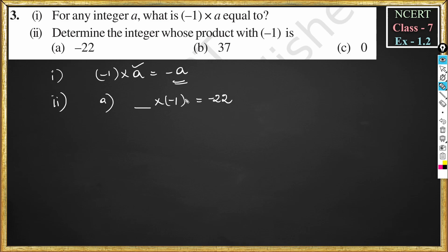So here, if minus one is multiplied to plus 22, the answer becomes minus 22. So the integer is 22, which when multiplied with minus one gives the product minus 22.